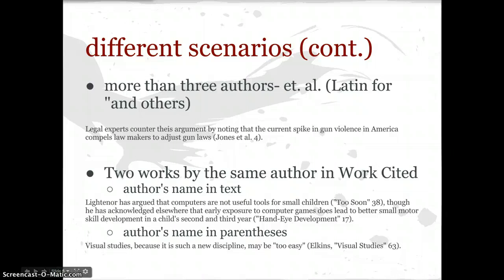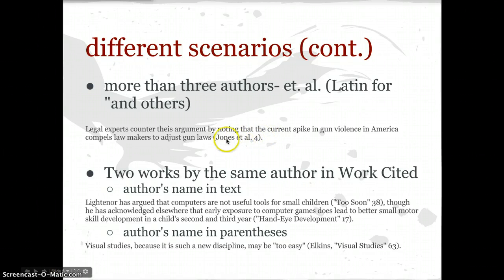Some more different scenarios: more than three authors. We use something called et al., which is Latin for 'and others.' Here's an example: 'Legal experts counter their thesis argument by noting that the current spike in gun violence in America compels lawmakers to adjust gun laws' — and that's Jones et al., which will be the first thing you see in the works cited. Et al. indicates there are more than three authors, and you would just need to look at the works cited page to figure out who those people are.